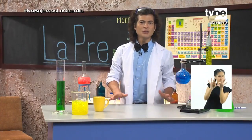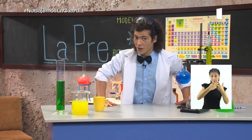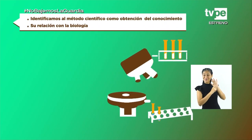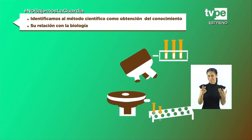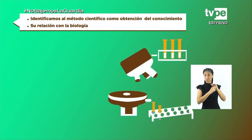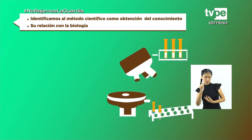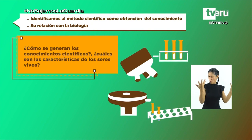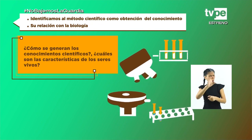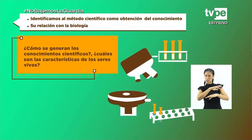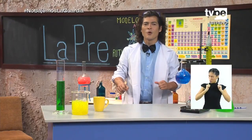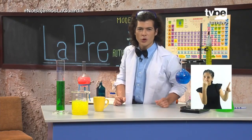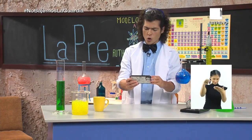Esto se pone interesante. Sospecho que el tema de hoy tiene que ver con la biología, ¿verdad? Efectivamente, el tema de hoy es identificar el método científico como obtención del conocimiento y su relación con la biología. Hoy responderemos las siguientes preguntas: ¿Cómo se generan los conocimientos científicos? ¿Cuáles son las características de los seres vivos? Además de otras situaciones que demuestran la aplicación del método científico en la vida diaria. Y lo mejor es que las chicas y los chicos de la PreAprendo en Casa ya están sintonizados con este programa. Tenemos algunas preguntas en nuestro WhatsApp.